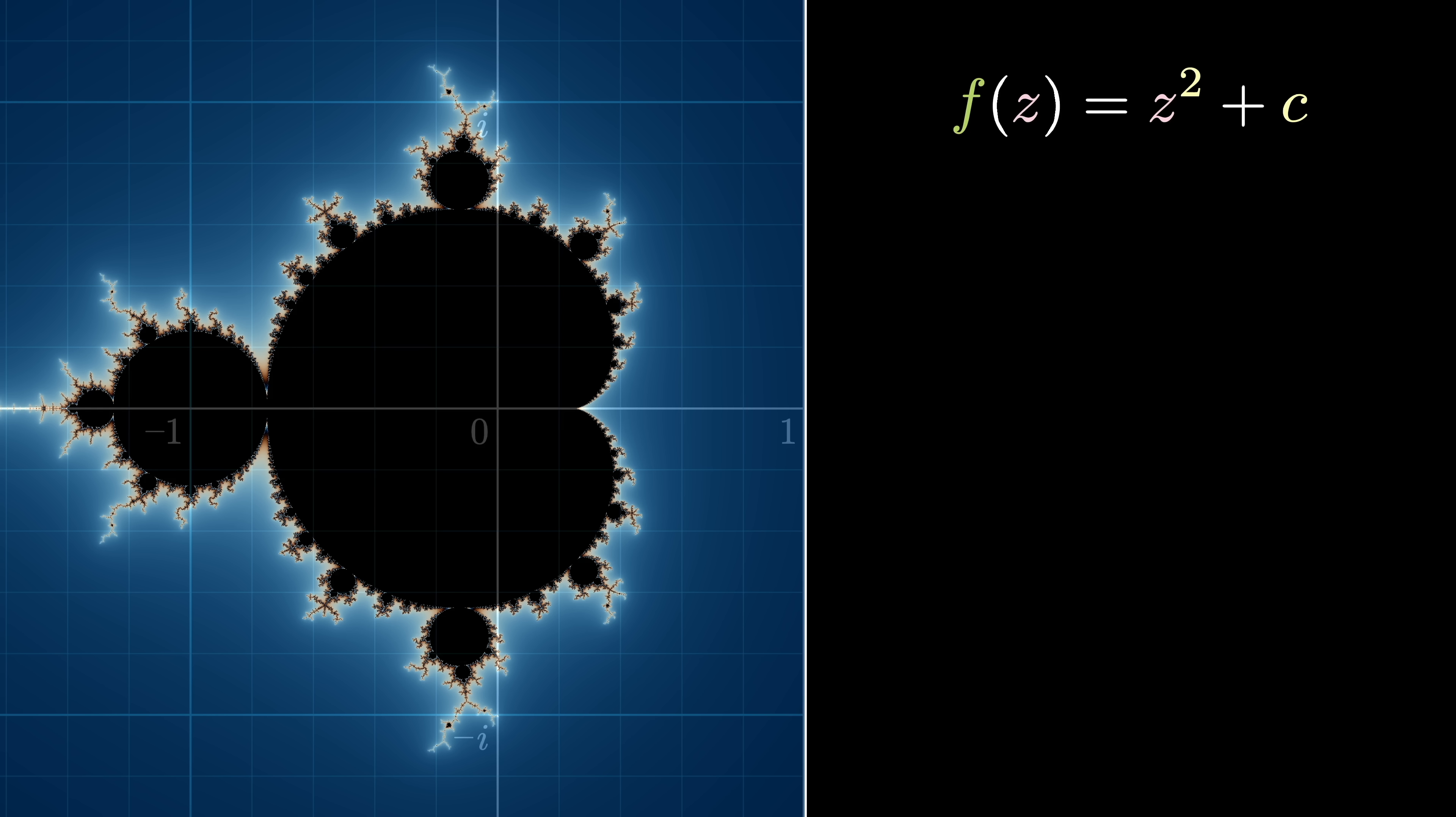So for instance, if I choose c equals negative 1 plus i, it gives us the function f(z) equals z squared plus negative 1 plus i. After that, start with z equals 0 and calculate f(z). Then plug this number back into f(z) and keep repeating.